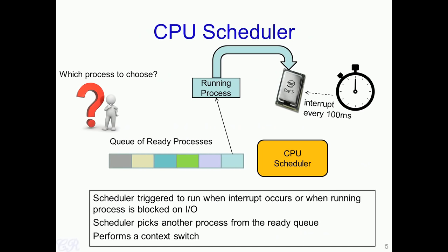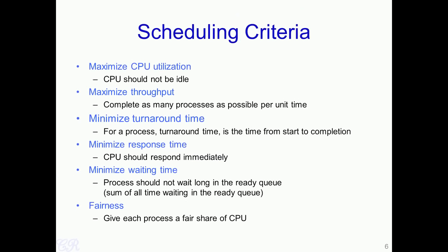Let us come back to the question of how the CPU scheduler should choose the next process to execute. There could be several CPU scheduling algorithms that look into the queue and make a particular decision. In order to compare these various scheduling algorithms, operating systems research defines several scheduling criteria that can be used to evaluate the advantages and disadvantages of each algorithm.